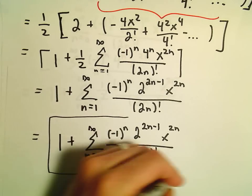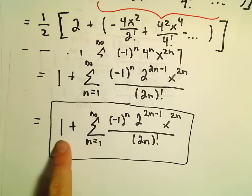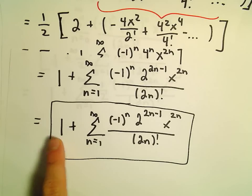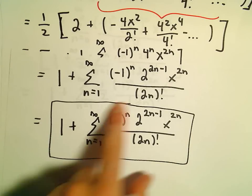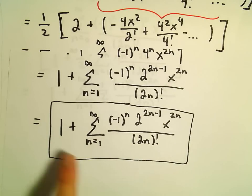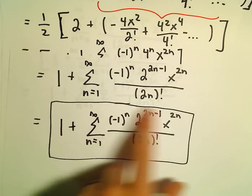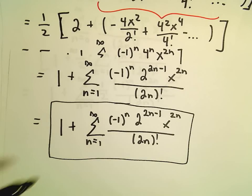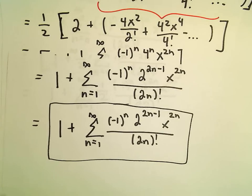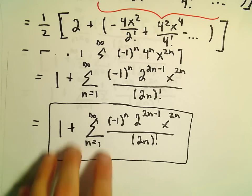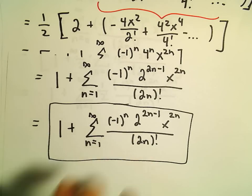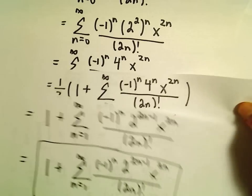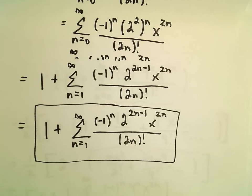Sometimes series expansions have a term or two that doesn't get incorporated into the summation, and that's fine. There's no clean way to absorb the leading 1 by changing the index. So the final series expansion for cosine squared x is 1 plus the sum from n equals 1 to infinity of negative 1 to the n times 2 to the 2n minus 1 times x to the 2n, over 2n factorial.